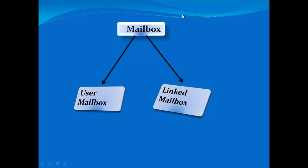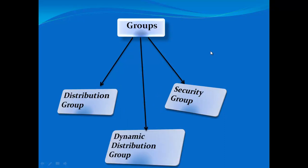A linked mailbox is used when you have a trust between two different domain forests, and the mailbox does not reside inside the organization where Exchange is deployed — it is in another organization. The mailbox is linked. That brings us to our second recipient type: groups, which has three categories.